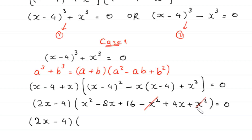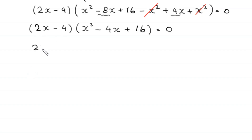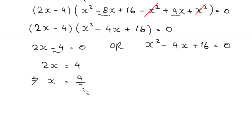We are left with x squared, and negative 8x plus 4x becomes negative 4x, plus 16, is equal to 0. So either (2x minus 4) equals 0, or (x squared minus 4x plus 16) equals 0. From the first equation, 2x equals 4, so x equals 2. This is the first solution.